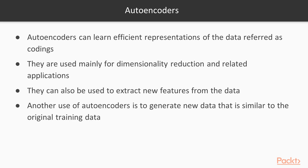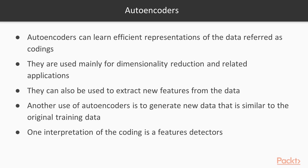Another use of autoencoders is to generate new data similar to the original training data — sometimes we need to expand the data available for training and autoencoders can be a useful tool for that. One interpretation of the codings is as feature detectors — the codings can be thought of as different features that may help us solve the problem. Autoencoders are very similar to multilayer perceptrons, which are the types of neural networks used in this course.